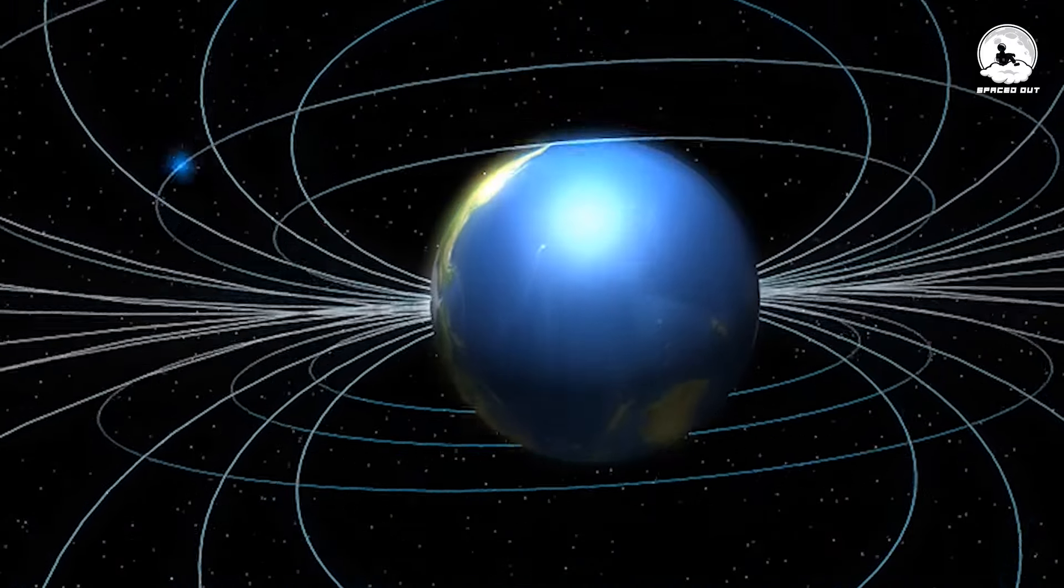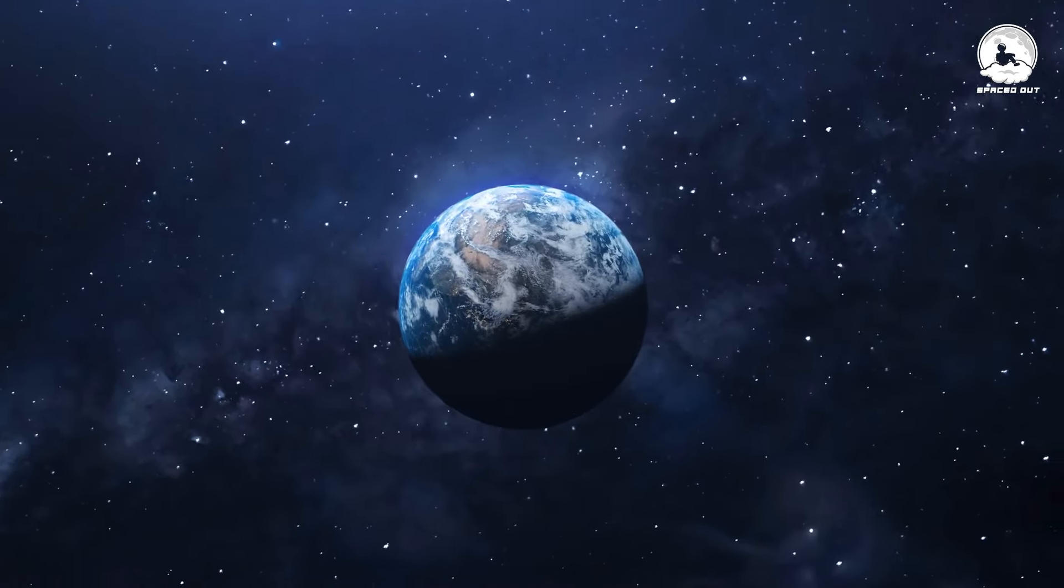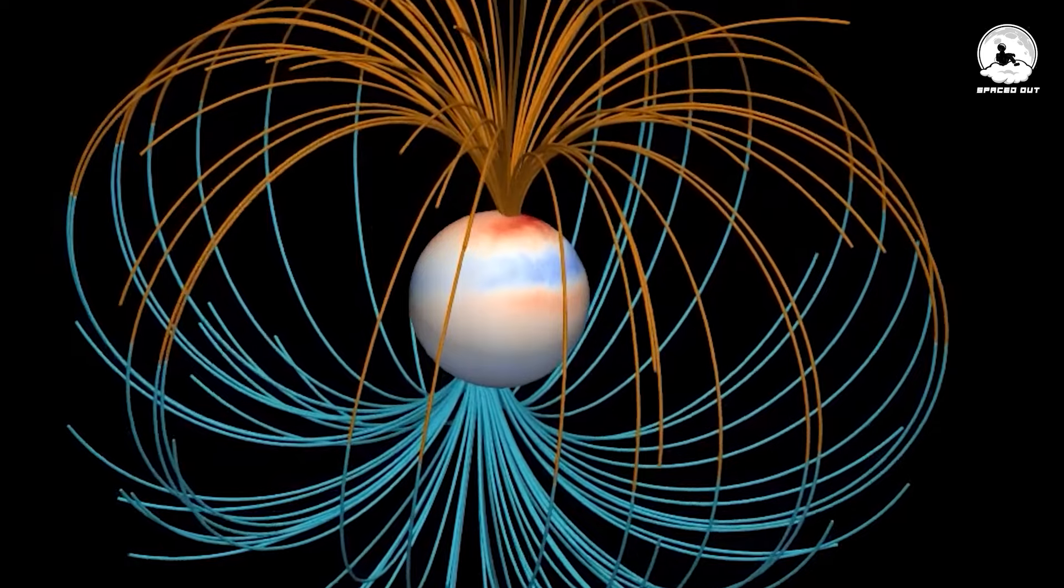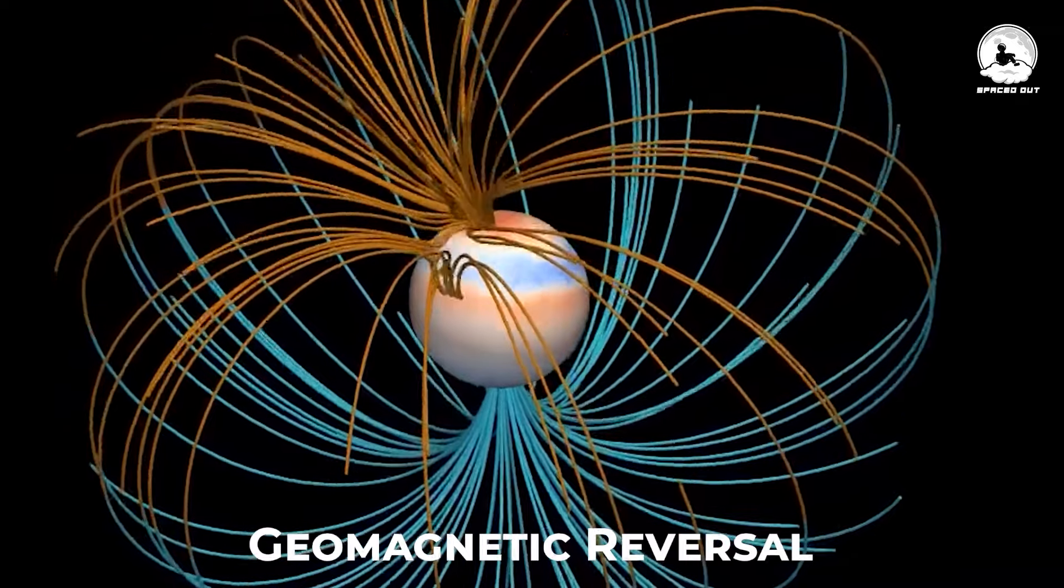The Earth's magnetic system, which has been a reliable guide for humans and animals for centuries, is currently undergoing a significant transformation. This is not a concept from science fiction, but a real and gradual event known as a geomagnetic reversal.